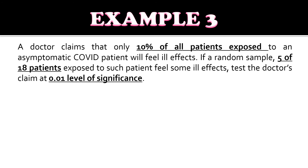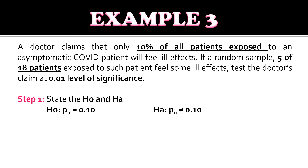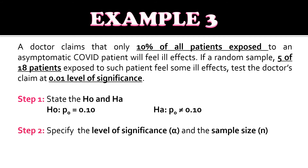For step one, we state the null and alternative hypothesis. Null hypothesis: population proportion equals 0.10. Alternative hypothesis: population proportion is not equal to 0.10. For step two, we specify the level of significance and sample size. The sample proportion is 5 out of 18, giving approximately 0.28. Alpha equals 0.01 and sample size equals 18.